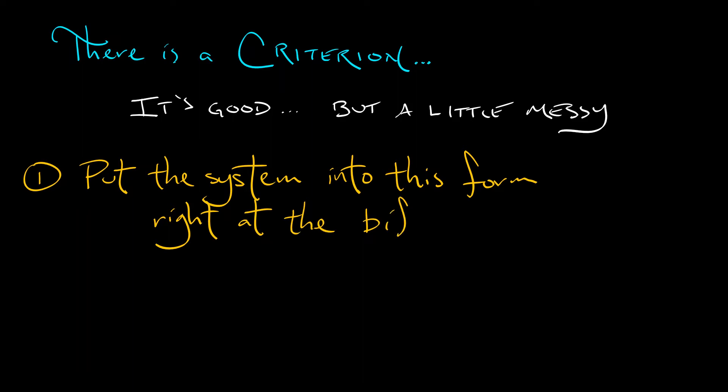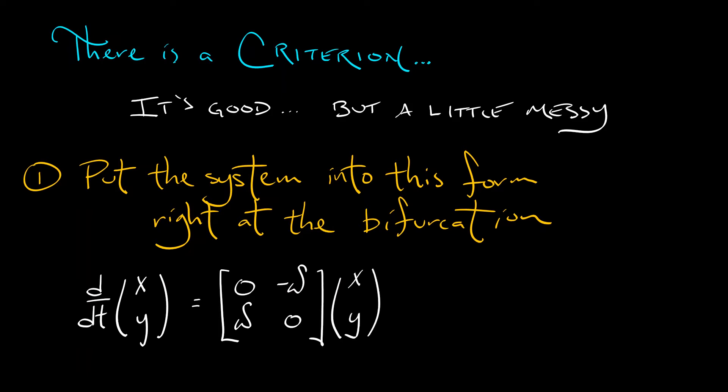I'm going to center it so that the origin is right at the bifurcation point. And I'm going to rewrite my system as the derivative of x and y is what? I'm going to split off the linear part. And I've got the matrix 0 omega, minus omega 0, times x y. And then I've got the nonlinear terms. And I'm going to pack those into two functions, f of x and y, and g of x and y.